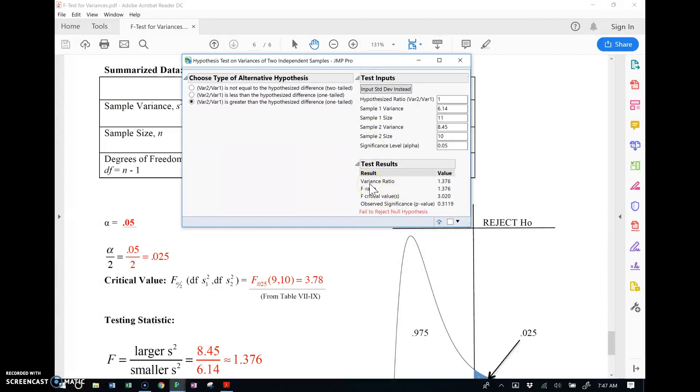Alright, the variance ratio, which is the F ratio, right? 1.376. That's this number right here, the testing statistic. The F critical value, 3.20, maybe that's because they want us to divide the alpha in half. Yeah, that's what they probably want us to do there. Let me fix that. Hold on. 0.025 and there you go, 3.779.